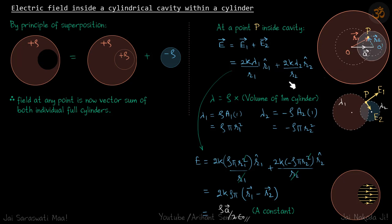Due to the second cylinder the field will be 2k lambda 2 by r2 r2 vector. So r2 vector is along this. Let's say the line joining the two centers, let's call it as a vector which is a constant.